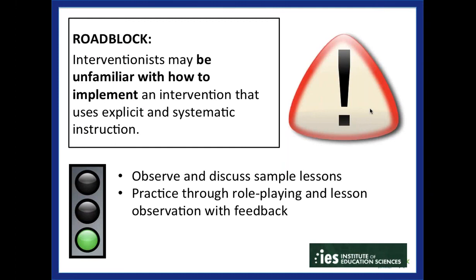Along with suggested practices, the panel also introduced three roadblocks commonly encountered when implementing explicit and systematic instruction. The first roadblock is that interventionists may be unfamiliar with how to implement an intervention using explicit and systematic instruction. To prevent this, interventionists need plenty of opportunities to observe and discuss sample lessons, benefit from hands-on experience practicing modeling and think-alouds, and roleplaying with other adults. Trainers can observe, provide feedback on what participants did well, and offer explicit suggestions for improving instruction. Teams also benefit from recording intervention lessons and analyzing the effect of modeling, think-alouds, and feedback on student learning.